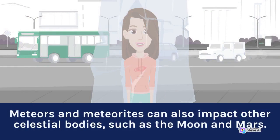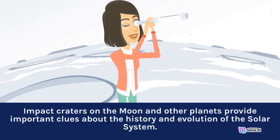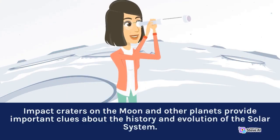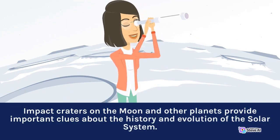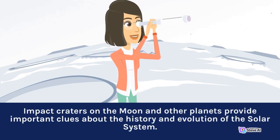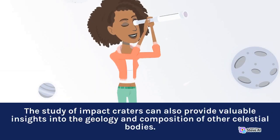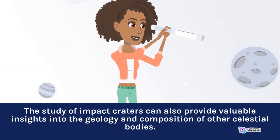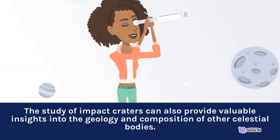Meteors and meteorites can also impact other celestial bodies, such as the Moon and Mars. Impact craters on the Moon and other planets provide important clues about the history and evolution of the solar system. The study of impact craters can also provide valuable insights into the geology and composition of other celestial bodies.